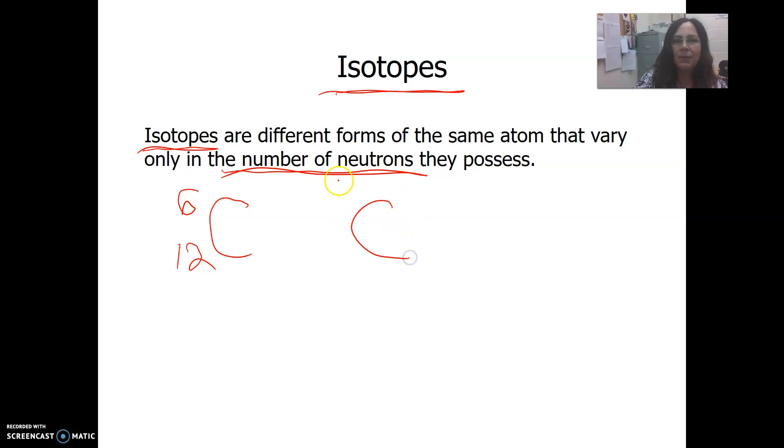The atomic number will never be different for an atom. If the atomic number, which is the number of protons, changes, then the entire atom changes. It will not be the same atom. Carbon will always have 6 for its atomic number, but there's an isotope of carbon that has a mass number of 13, and another isotope with a mass number of 14. What information can we get from these symbols? We can get the number of protons, neutrons, and electrons for every isotope of carbon.